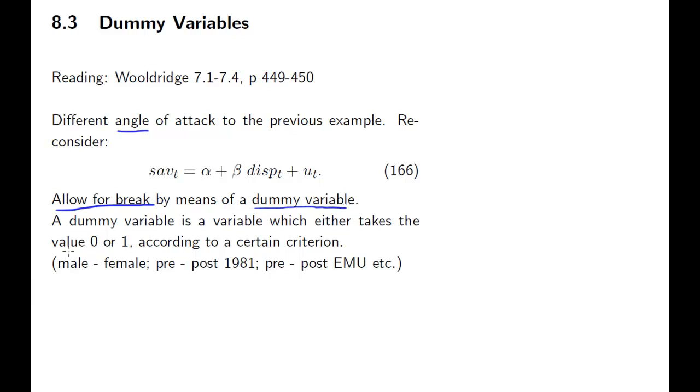A dummy variable is a variable that takes value 0 or 1. In our case, we're going to call that dummy variable dt and it is going to take a value of 0 for all observations t for which t, our year, is smaller or equal to 1981, and it's going to take a value of 1 for t larger than 1981.